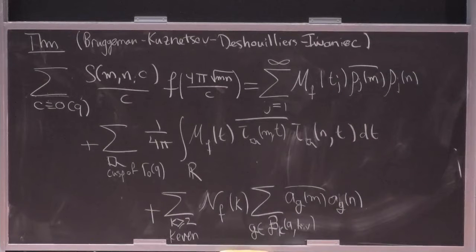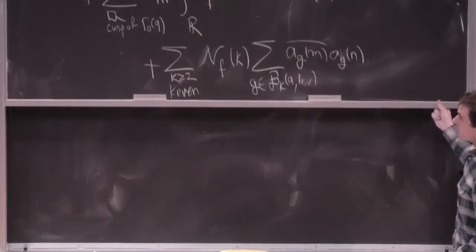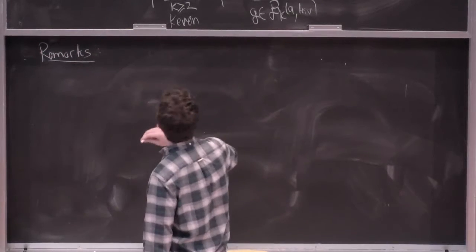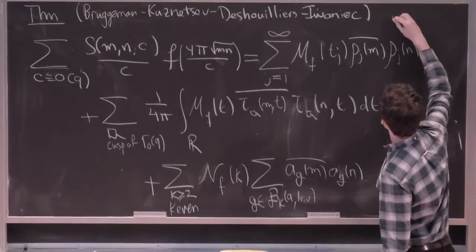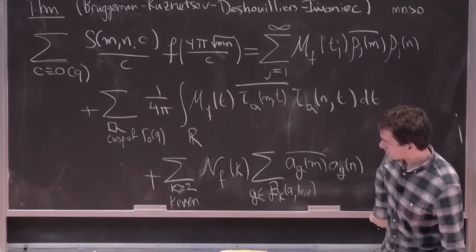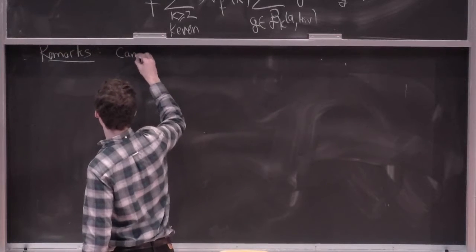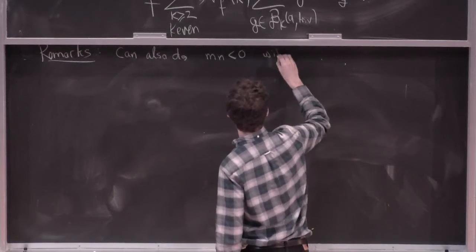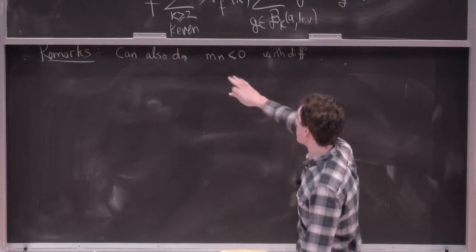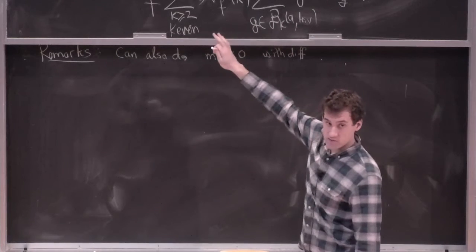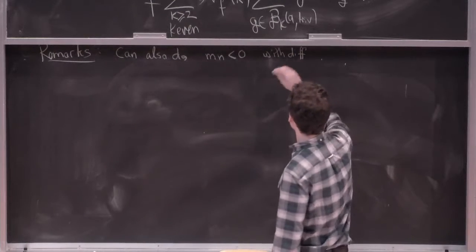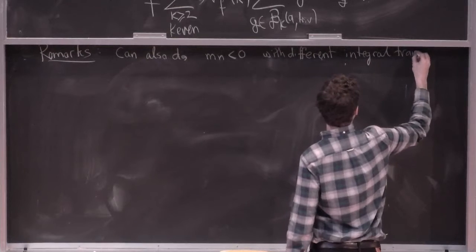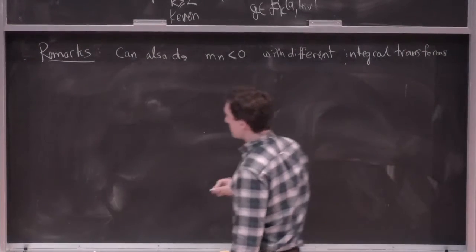Okay, so that's the formula with the test function inverted. I think it's also important to say maybe a couple of remarks. So here, oh, I should add the hypothesis that M times N is positive. So the remark is that we can also do M times N is negative with different integral transforms. There's a similar formula, but actually in the M times N negative case, the holomorphic contribution doesn't show up at all because, of course, holomorphic forms have no negative Fourier coefficients.